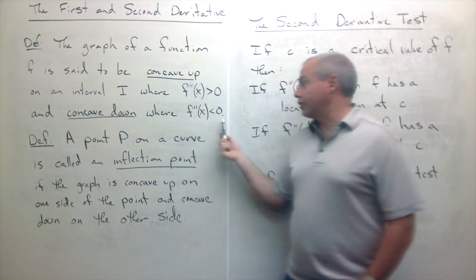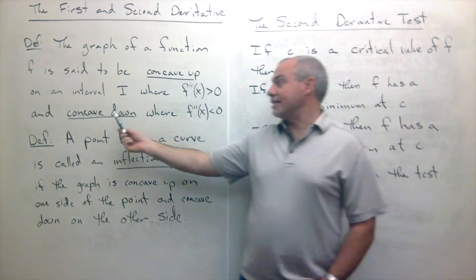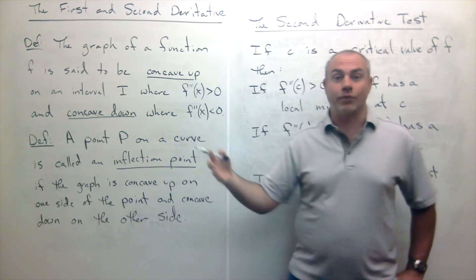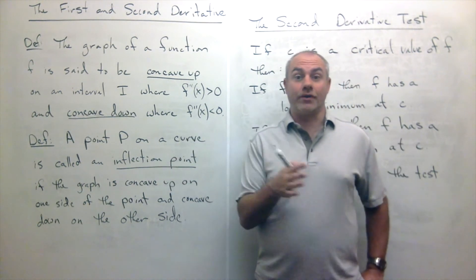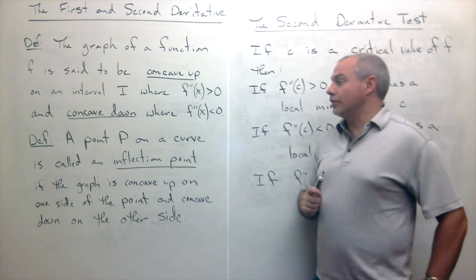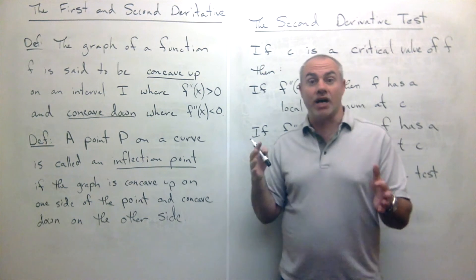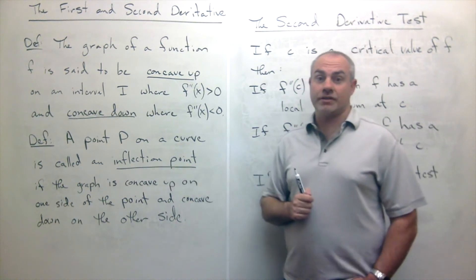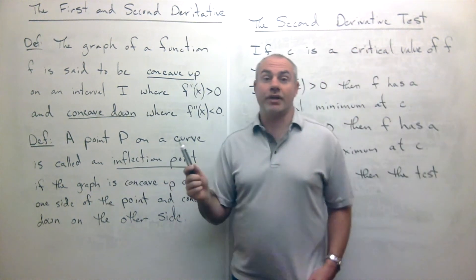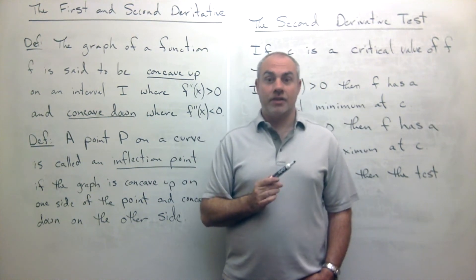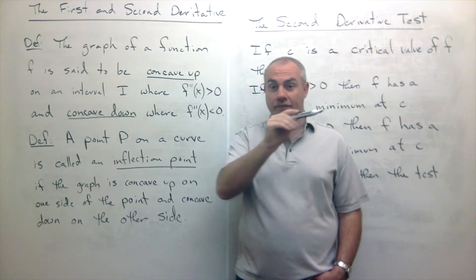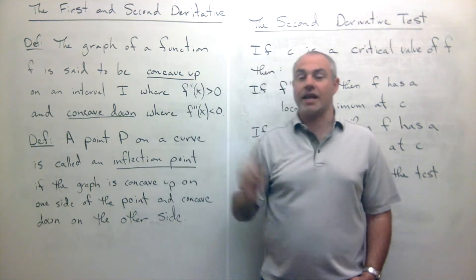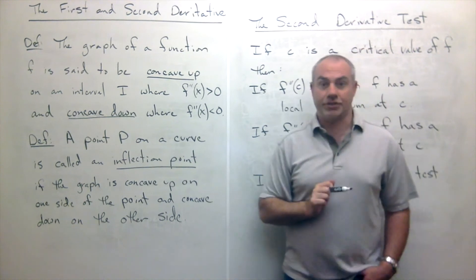Similarly, if the second derivative is negative over an interval, then we say that interval is concave down. Just like when we moved from positive to negative or negative to positive in terms of the first derivative and found local maxes and mins, there's a similar piece for the second derivative — we can test to find inflection points. An inflection point is a place where you switch concavities: you're going along with positive concavity and then switch to negative. The point where that switch is made is called an inflection point.